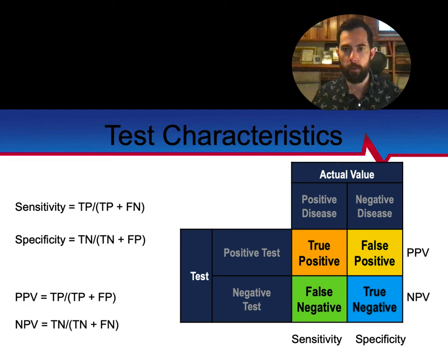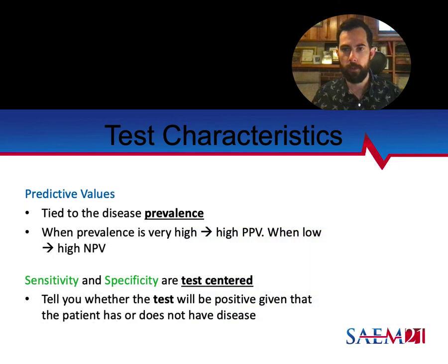Whereas sensitivity and specificity are centered on the disease, positive predictive value and negative predictive value are centered on the test. PPV equals true positives divided by true positives plus false positives; NPV equals true negatives divided by false negatives plus true negatives. These are easier to remember because they're part of the name. However, predictive values can mislead you because they're tied to prevalence. When prevalence is really high, you get a higher PPV; when it's really low, you get a higher NPV. Studies that boast a 99% NPV may simply have a 1-in-1000 pathology rate, which automatically inflates that value.